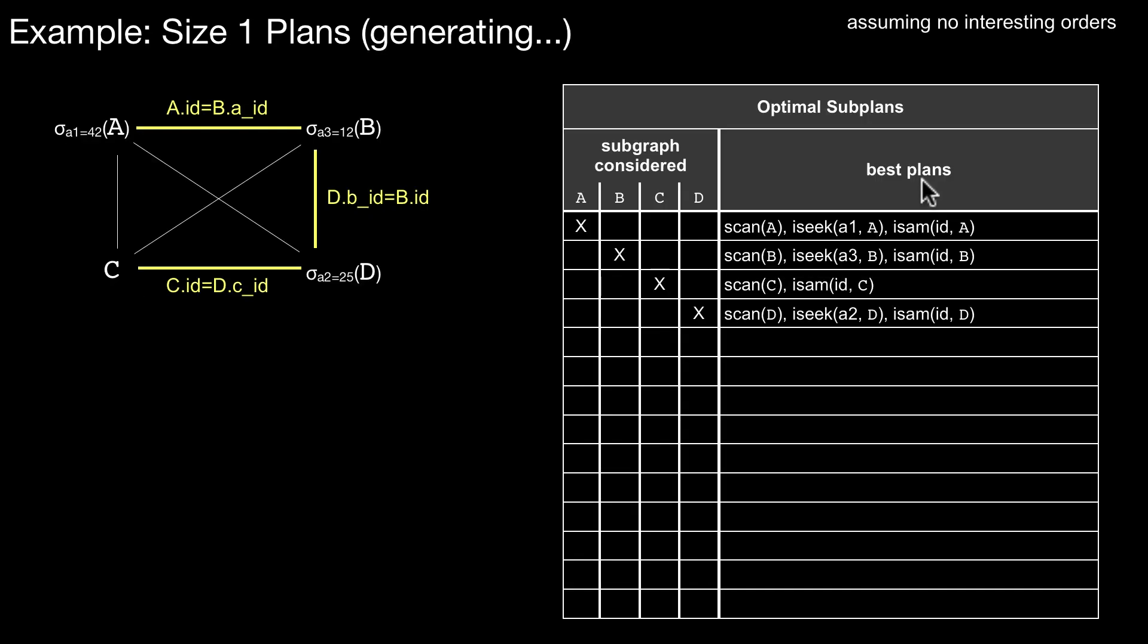So, let's make it more concrete. Let's assume we have this query. What do we do to start dynamic programming? We start by computing optimal subplans for the individual relations. We have four relations, and I mark them here in this table.